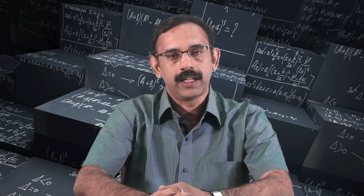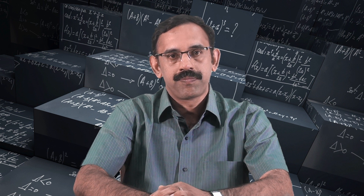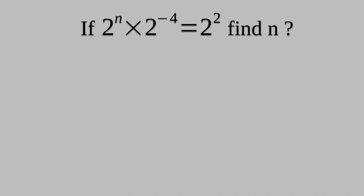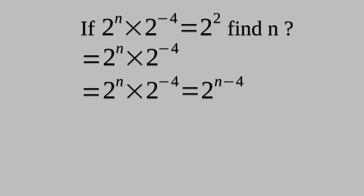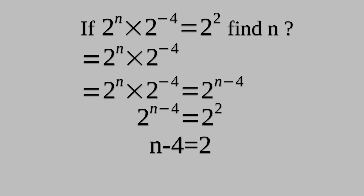Now let us try another problem. If 2 raised to n times 2 raised to minus 4 is equal to 2 squared, what will be n? By the law of exponents, the left-hand side can be written as 2 raised to n minus 4. Then, 2 raised to n minus 4 equals 2 squared. So, n minus 4 equals 2, and hence n equals 6.